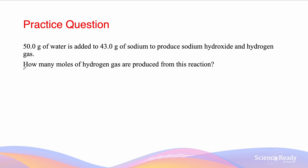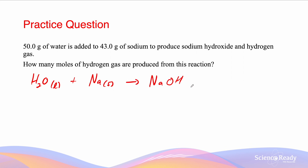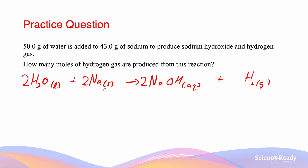We begin by writing out our equation: water H₂O plus sodium metal, which is solid, produces sodium hydroxide in the aqueous state and hydrogen gas. Now that our equation is balanced, we can see that the ratio of water to sodium hydroxide is 1 to 1.